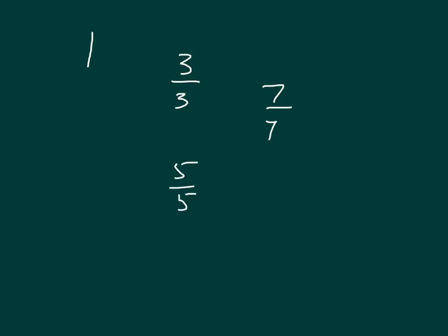Like 5 fifths, or 7 sevenths, or 3 thirds, or 4 fourths, or even 25 twenty-fifths. All of those are equivalent or equal to 1.